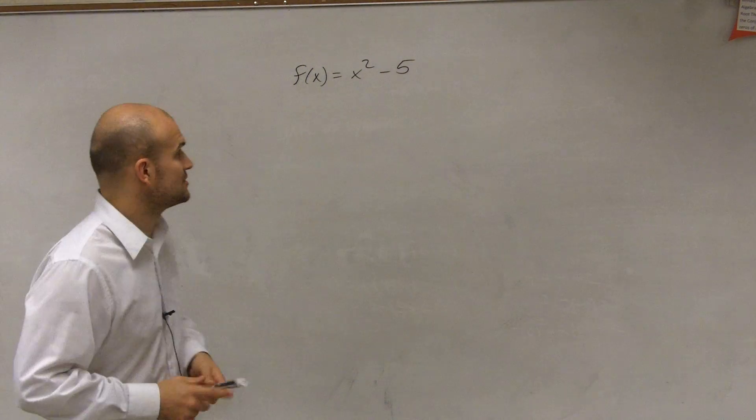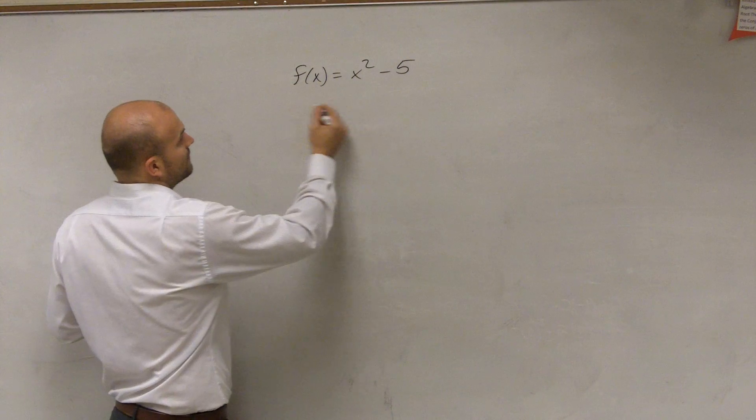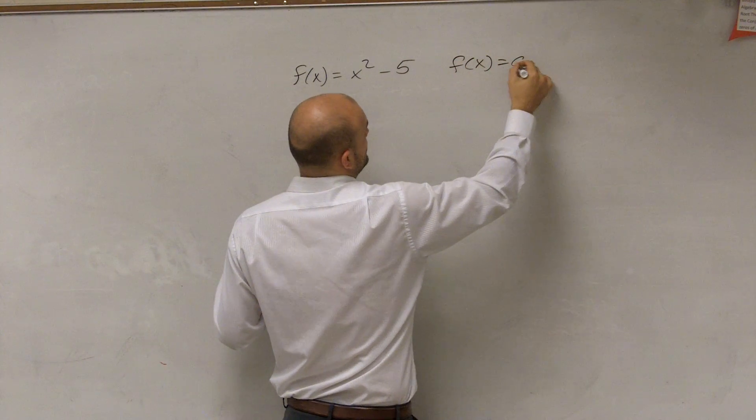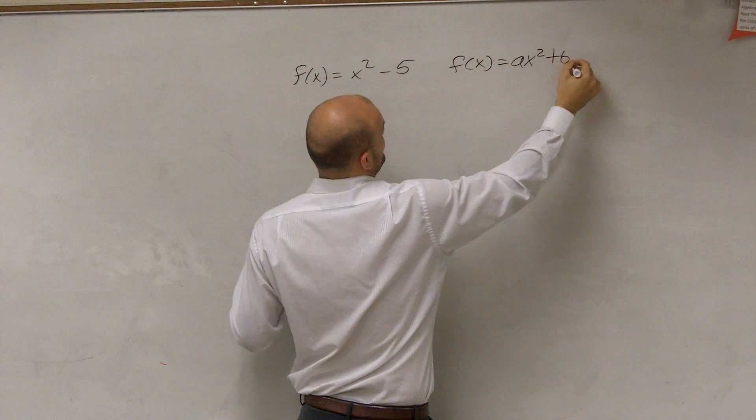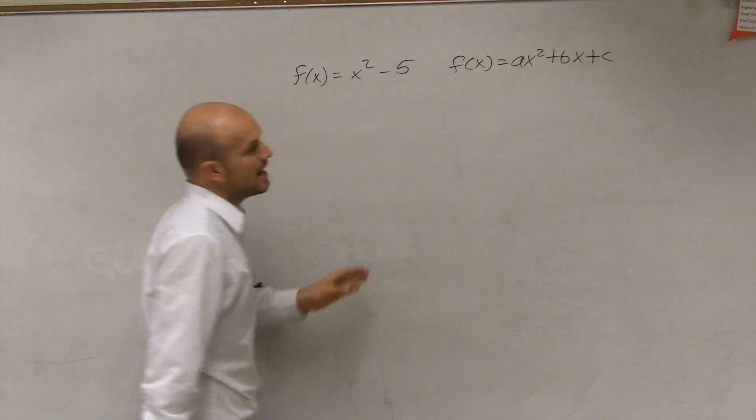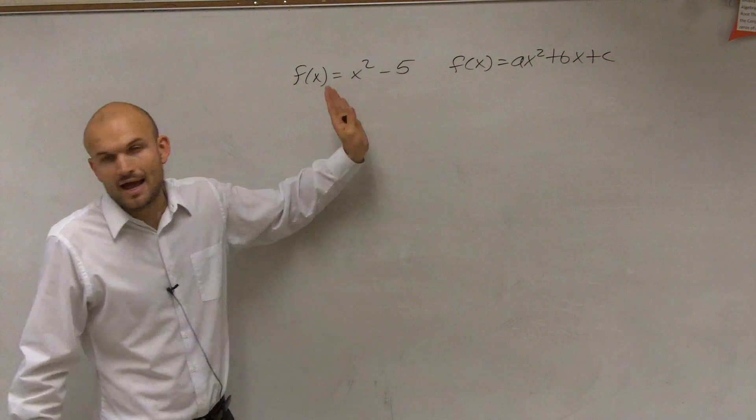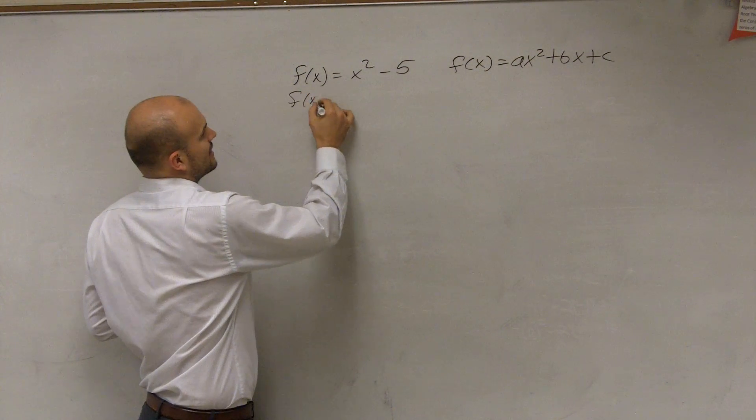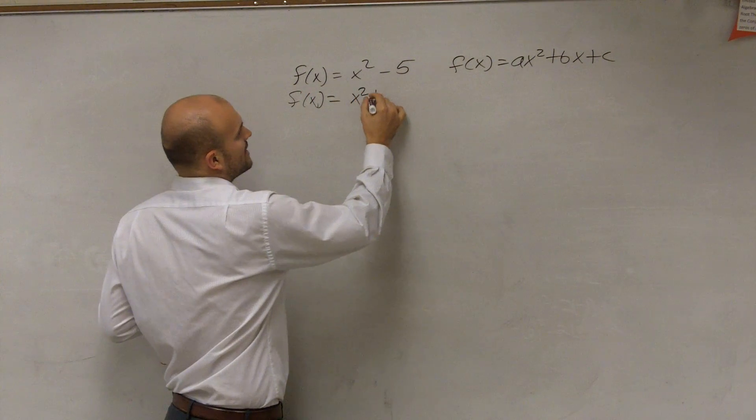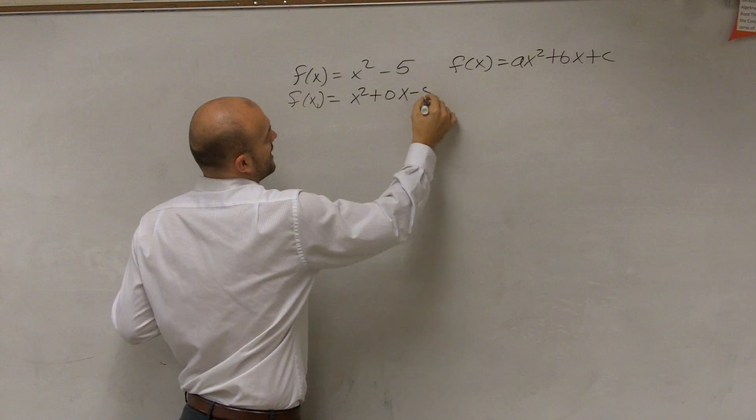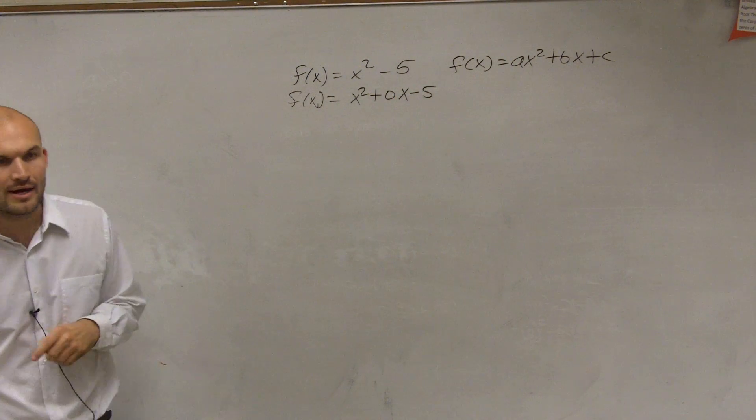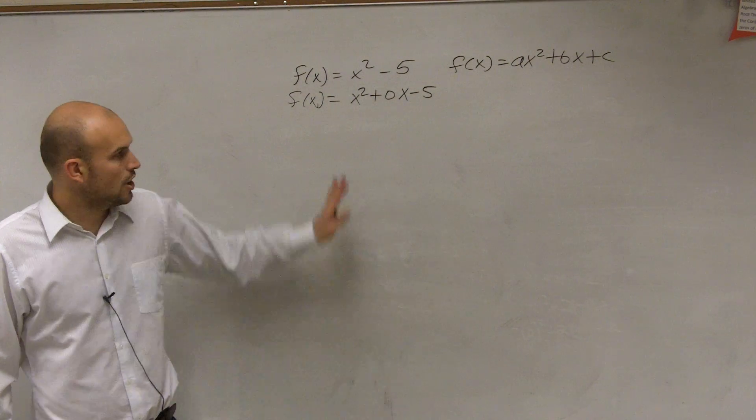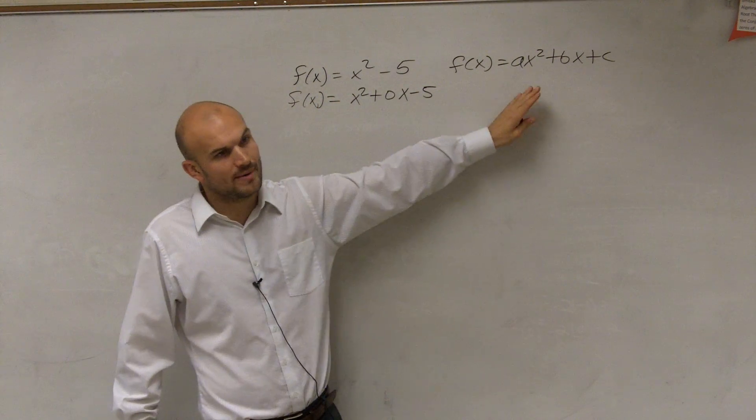The first thing I always like to do is remember that all functions can be written in the form f(x) equals ax squared plus bx plus c. Now, in this graph, I don't have three terms, I only have two. So to write it in quadratic form, I can write it as x squared plus 0x minus 5. So therefore, my b is going to be 0. All quadratics can be written in this format.